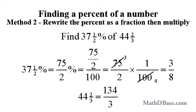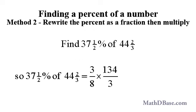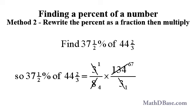44 and 2 thirds can be written as 134 over 3, by multiplying 44 by 3 in the denominator to get 132, then adding the 2 from the numerator to get 134. So 37.5% of 44 and 2 thirds is equal to 3 over 8 times 134 over 3, which we can reduce first by canceling 3s and dividing 134 and 8 by the highest common factor, which is 2, to get 67 over 4, or 16 and 3 quarters.